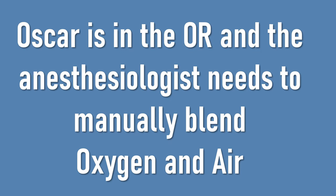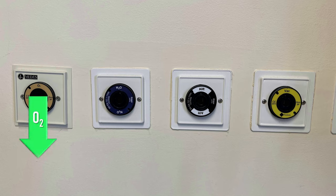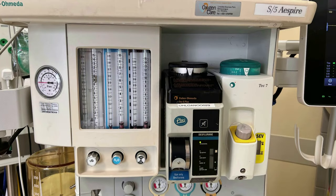Oscar is in the OR and the anesthesiologist needs to manually blend oxygen and air. Oxygen, nitrous oxide, and air are piped into most operating rooms via high-pressure pipelines, with plugs that connect to the anesthesia machine or ICU ventilators. There is also a suction port. On a traditional anesthetic machine you have a series of flow meters — an oxygen flow meter, a nitrous oxide flow meter, and an air flow meter — along with vaporizers for the volatile anesthetic agents.